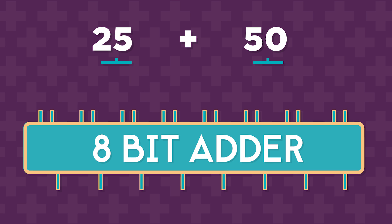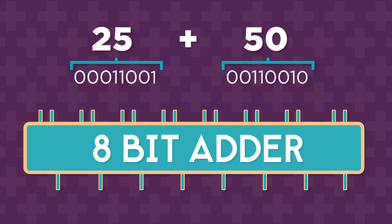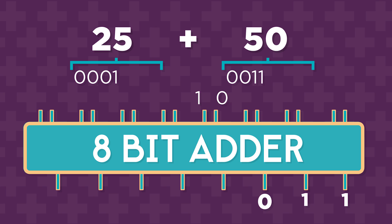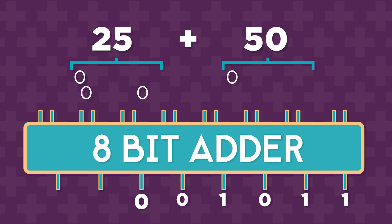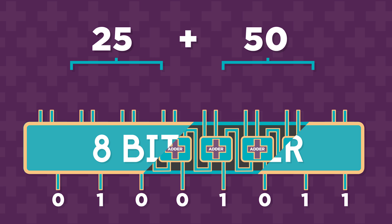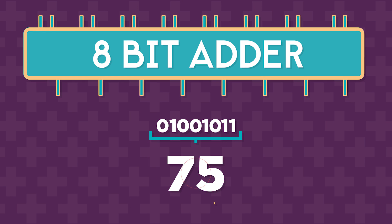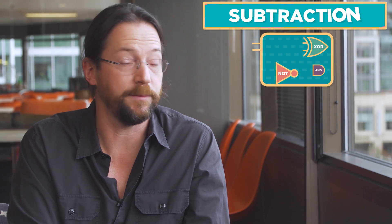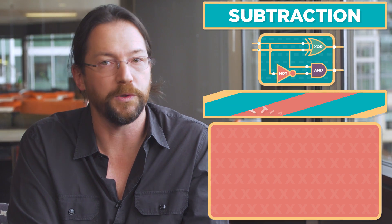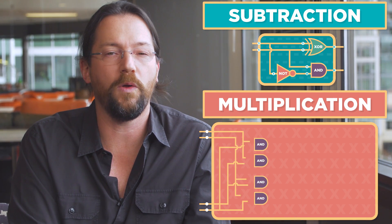Each number is represented using 8 bits, resulting in 16 different electrical signals that go into the circuit. The circuit for an 8-bit adder has lots of little adders inside of it, which together calculate the sum.